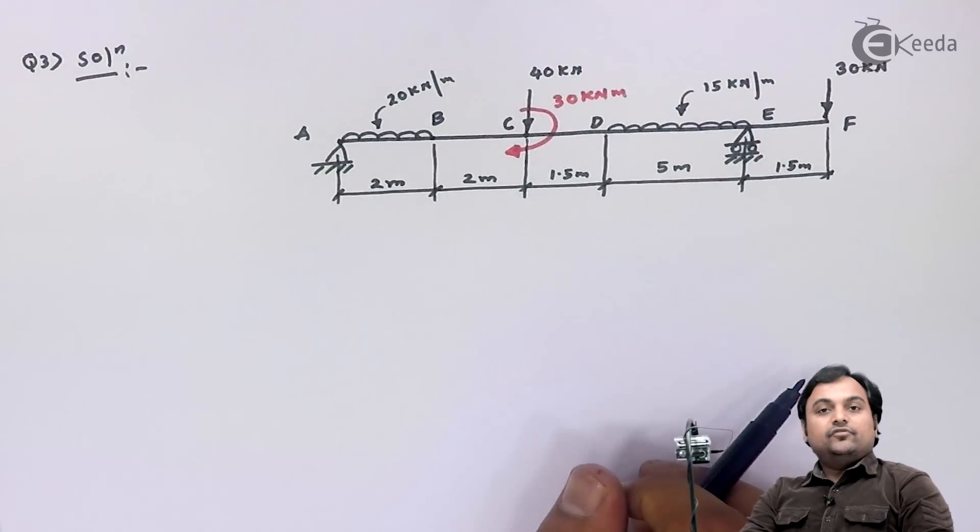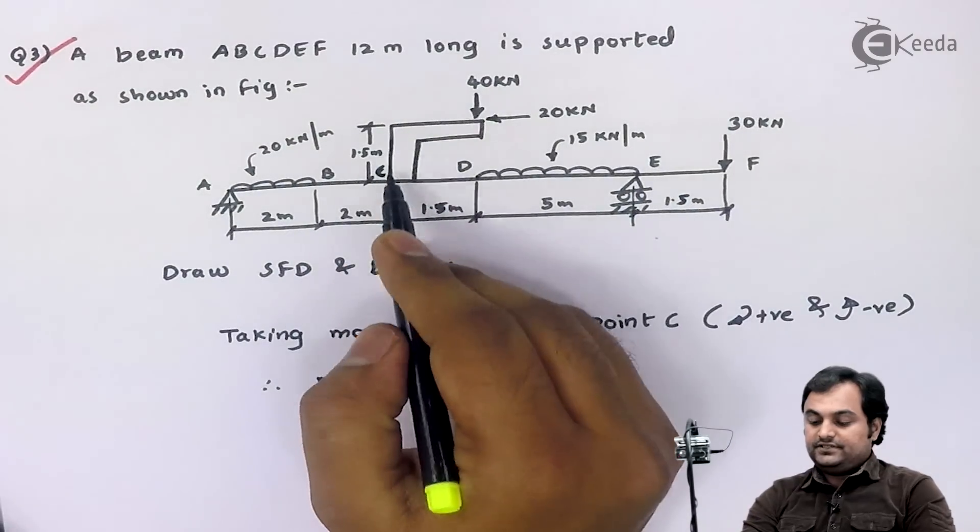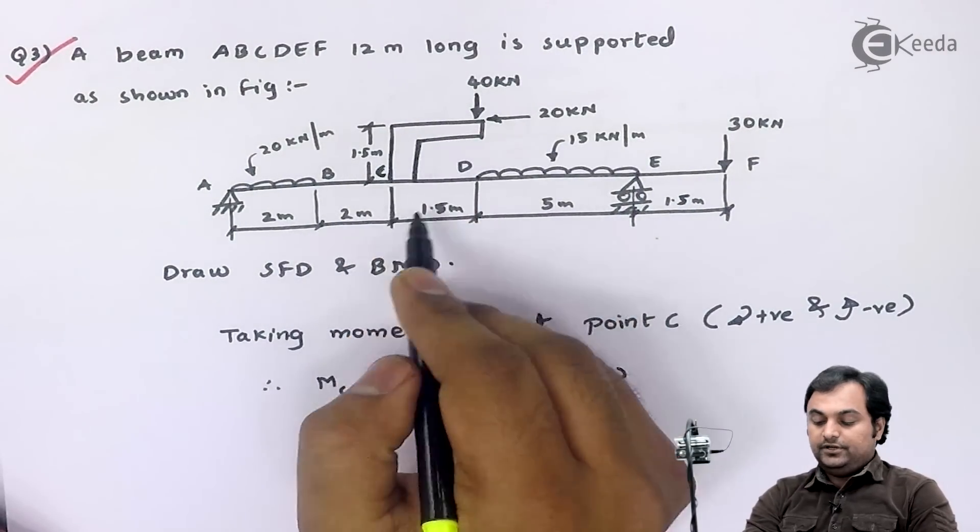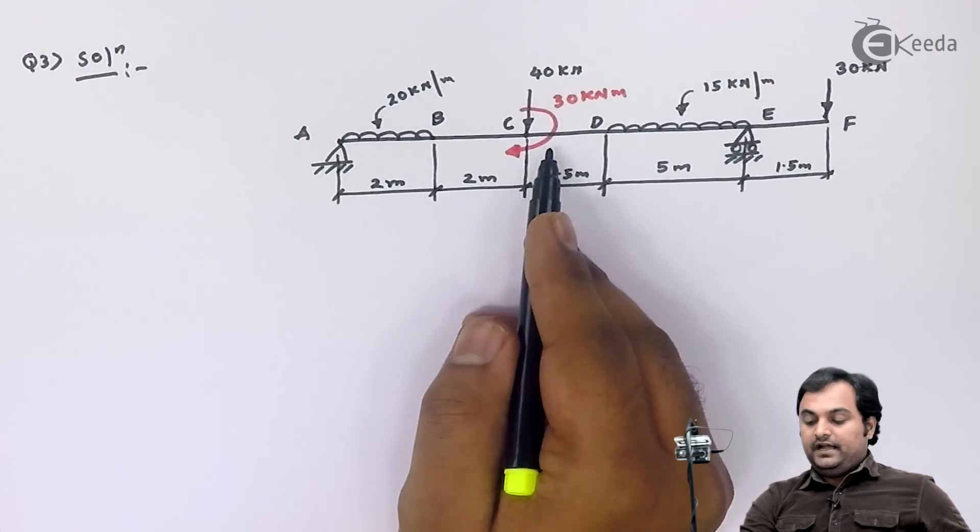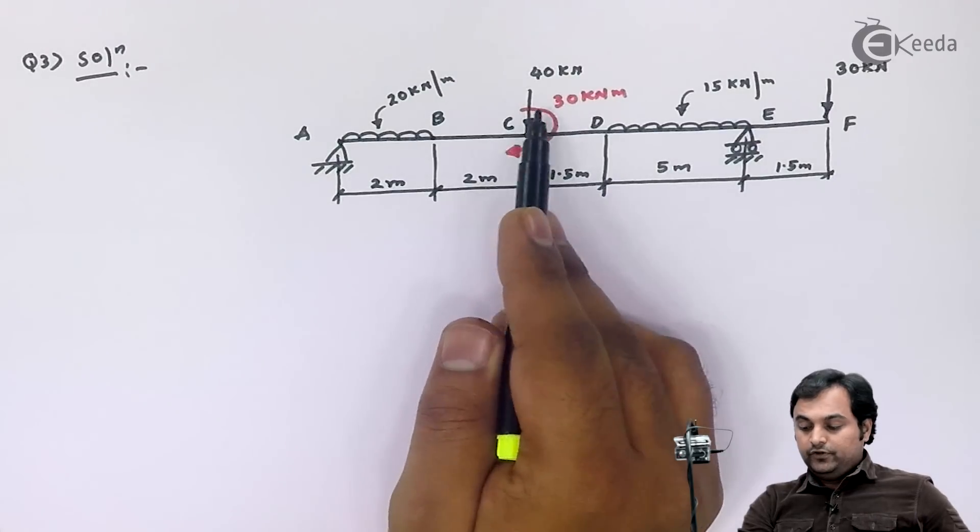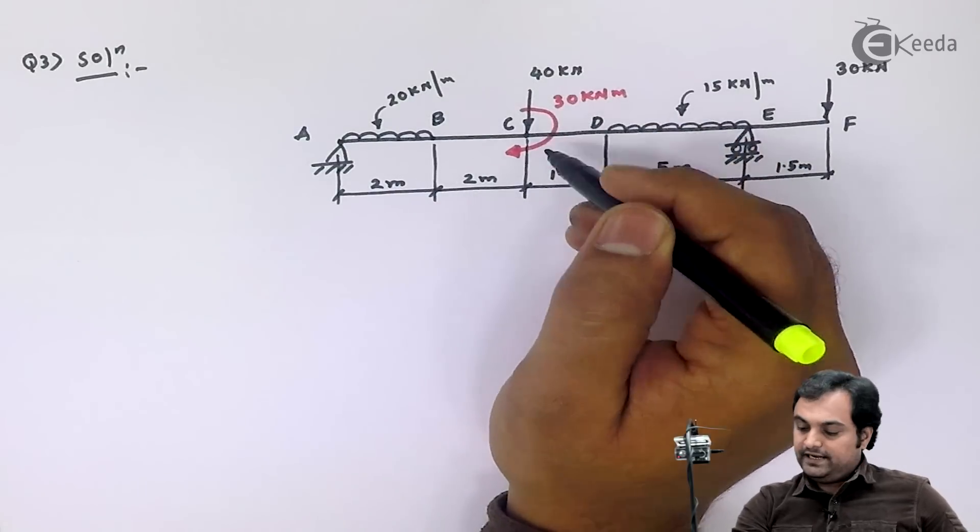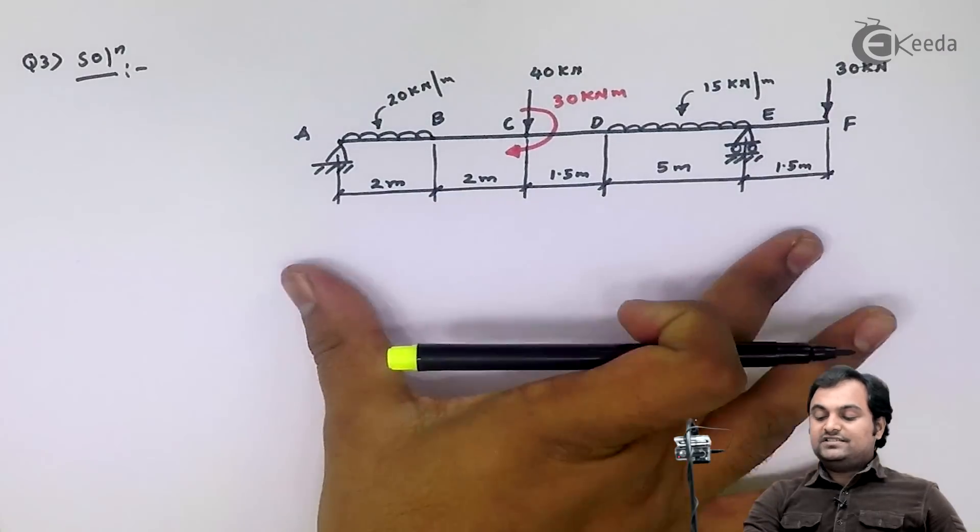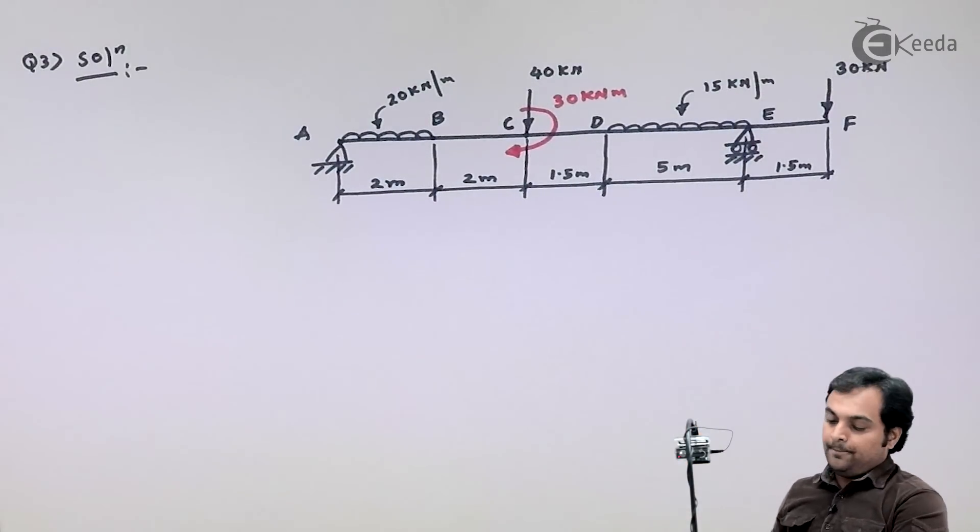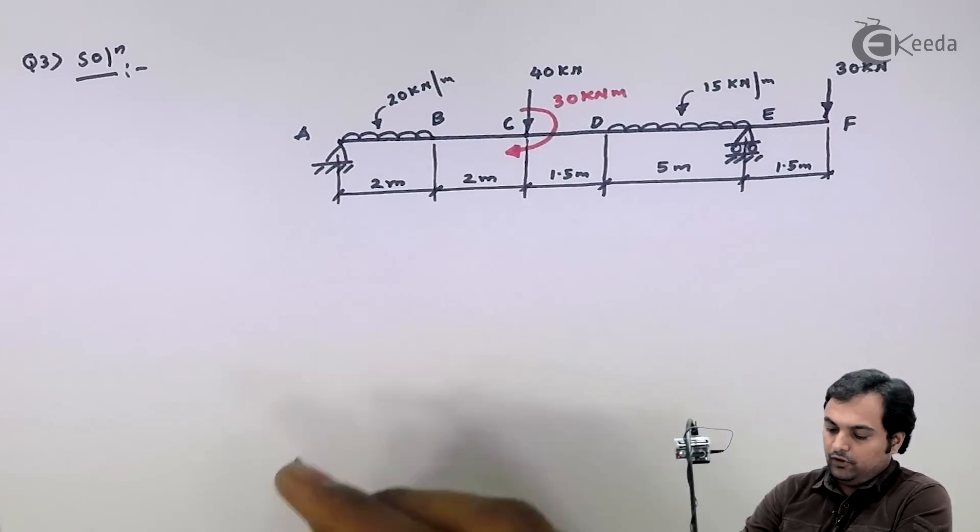Here is the diagram of the beam. I've replaced this bracket with the moment acting at point C—the answer is 30 kilonewton meter positive, so it's clockwise moment. At the same time there's a downward load of 40 kilonewtons acting at point C. Now this is the complete beam, and based on this we have to draw the SFD and BMD.